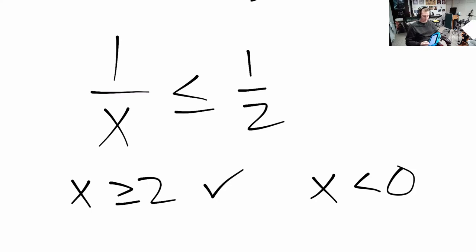A negative number works because when you divide by a negative here, you get a negative fraction. Any negative fraction is smaller than any positive fraction.